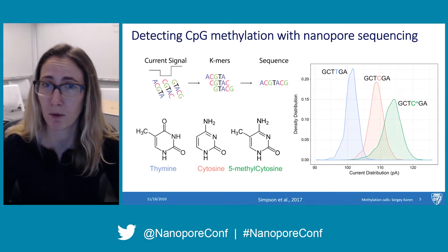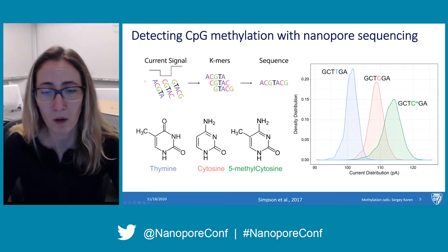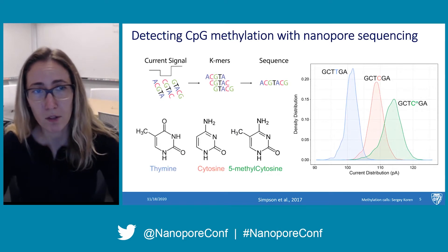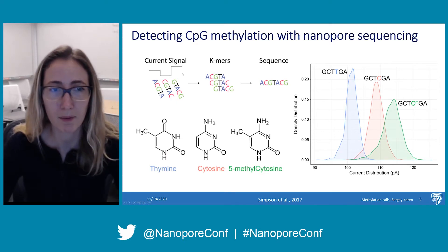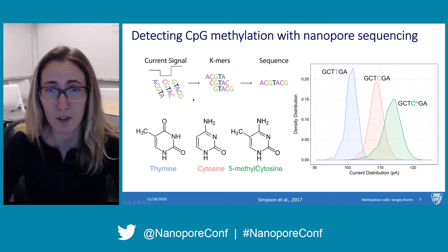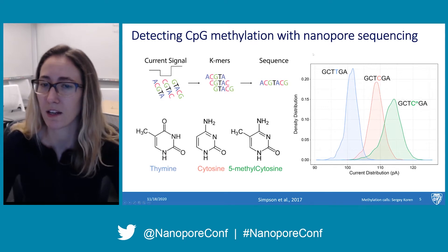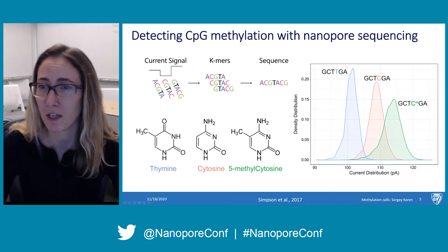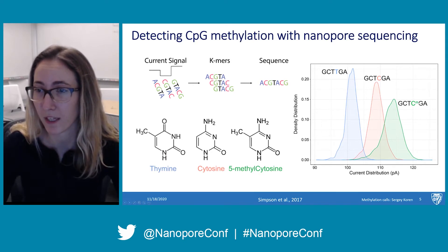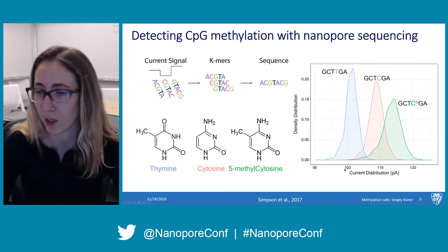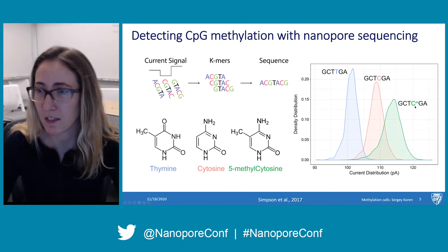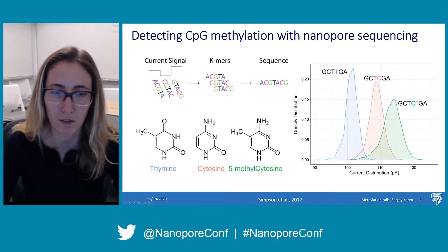We detect DNA CpG methylation with nanopore sequencing. A single-stranded piece of DNA flows through a protein nanopore, and as the DNA flows through, changes in current from the top and bottom of the membrane tell us what bases are in the pore at that time — we can see what K-mers are present. There is a difference in the current distribution when K-mers change from T to C to methylated C, shown as different peaks in the density distribution of the current. We can actually tell the difference between Cs and methylated Cs, even though the structures look very similar.